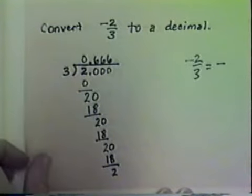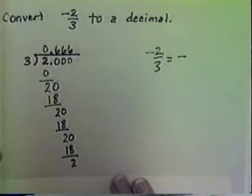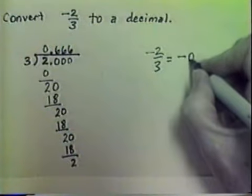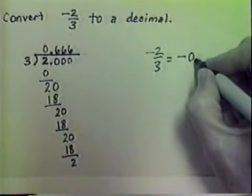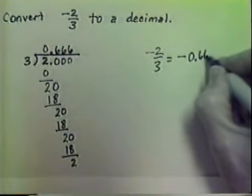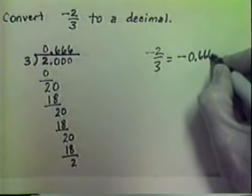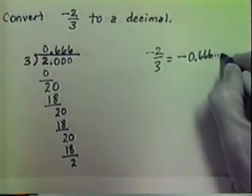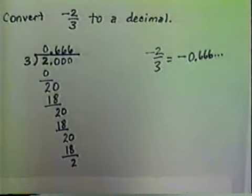And so we can write our answer: negative two-thirds equals negative zero point six, six, six, and more sixes so we can tell what's coming next. Then put the three dots — which are ellipses — and so on, in the same fashion.